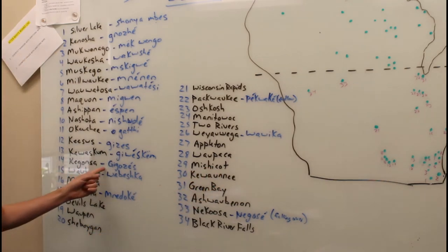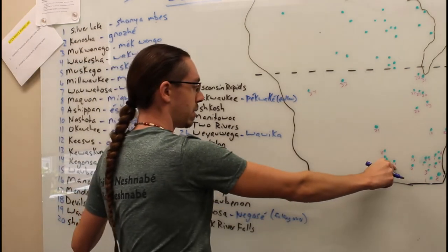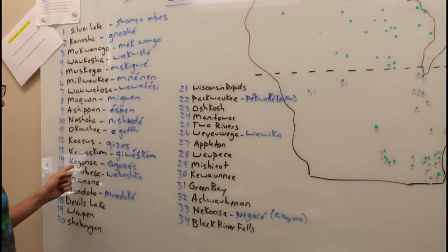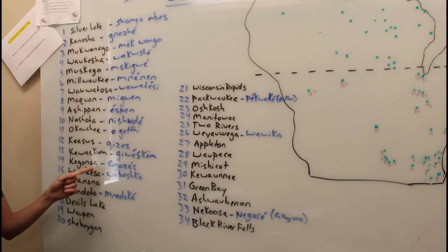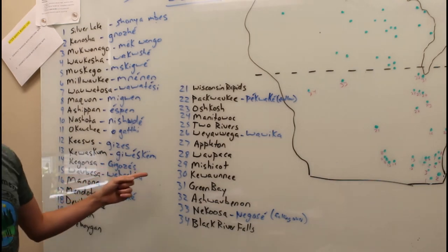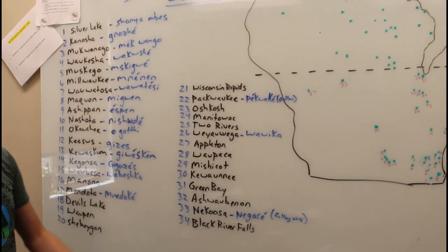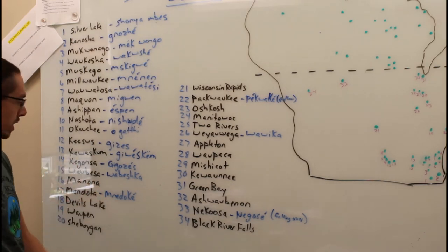Number 14, you move a little bit west of there, you're into Kegonsa, Wisconsin, and that actually comes from Keegozas, which is a little fish.